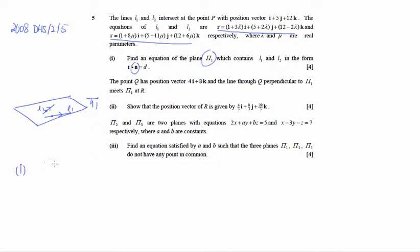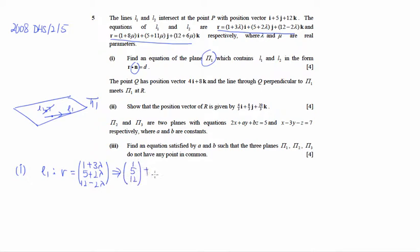For part 1, we will rearrange the equation for L1. What is given to us is in IJK form, so we split it up: I component is 1 plus 3λ, J component is 5 plus 2λ, and K component is 12 minus 2λ. This tells us the equation will look like (1, 5, 12) plus λ(3, 2, −2).